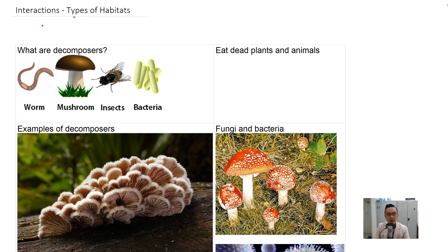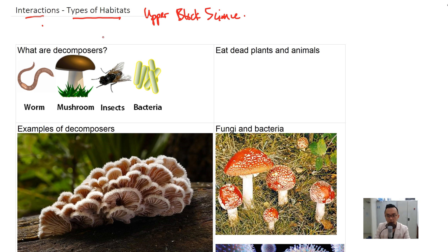Hi, in this video we're going to learn about the types of habitats. This is under the Interactions module of Upper Block Science, under the Interactions module — different types of habitats. It is also together with Living Together and Food Chain and Food Web. So let's get started.